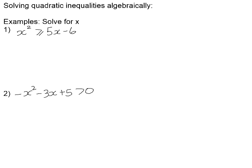Let's take a look at some examples where we solve quadratic inequalities algebraically. In order for us to solve a quadratic inequality, the same applies for a quadratic equation: we need to get it into standard form, but we must have zero on one side because we're trying to compare the values to zero so we can see whether they're positive or negative.